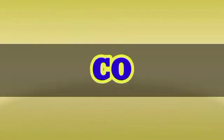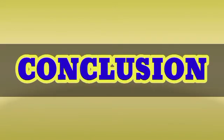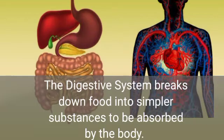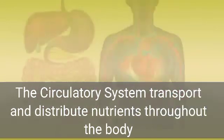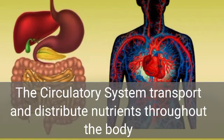In conclusion, the digestive system and the circulatory system work together in such a way that the digestive system breaks down food into simpler substances to be absorbed by the body, while the circulatory system is responsible for transporting and distributing those nutrients throughout the body.